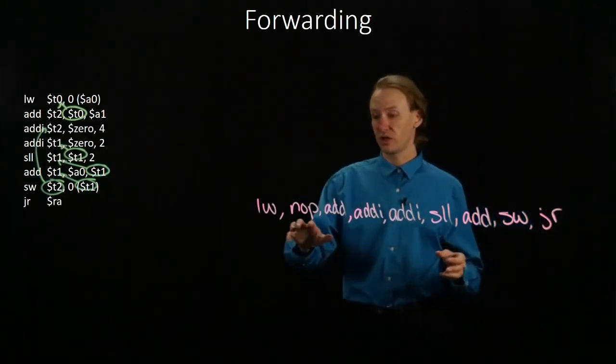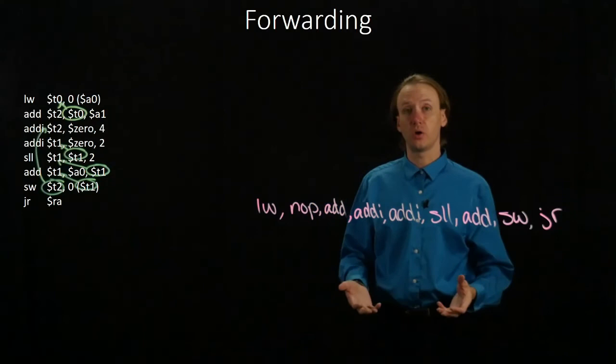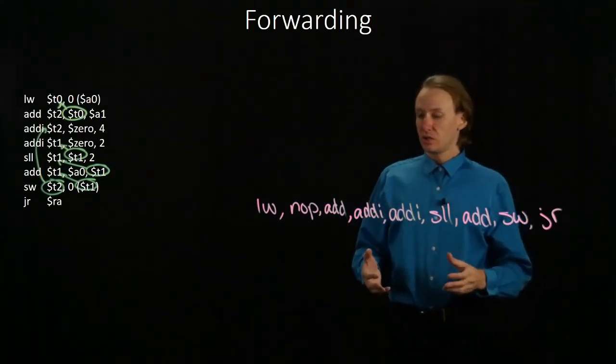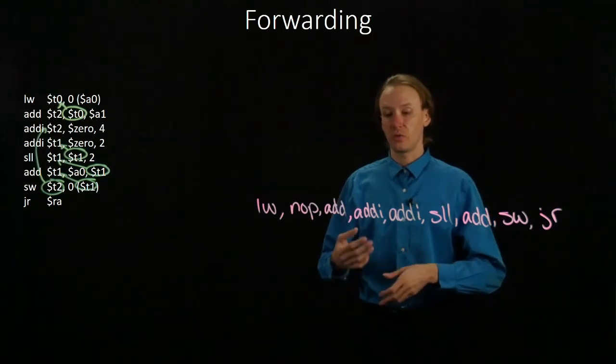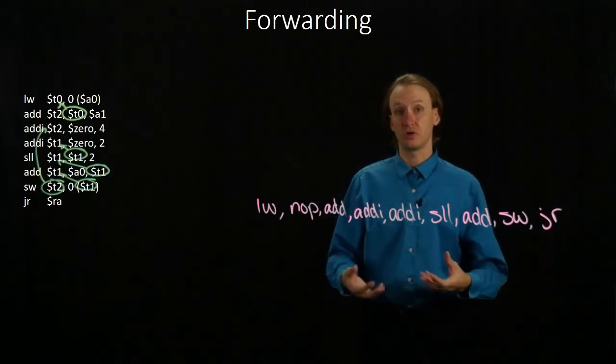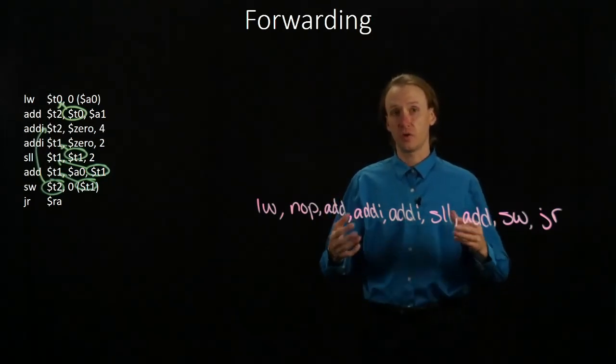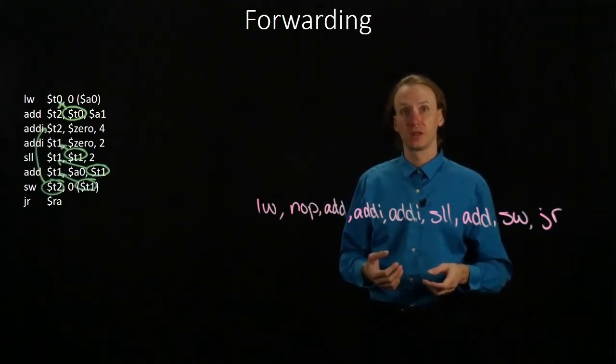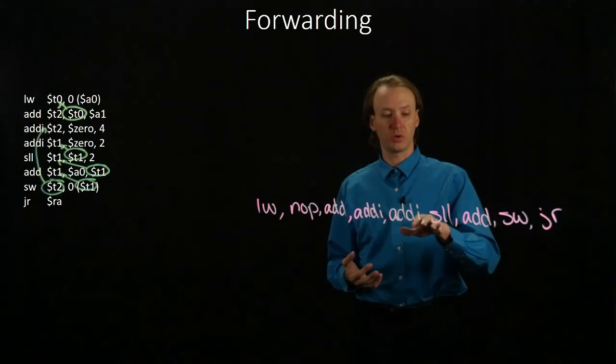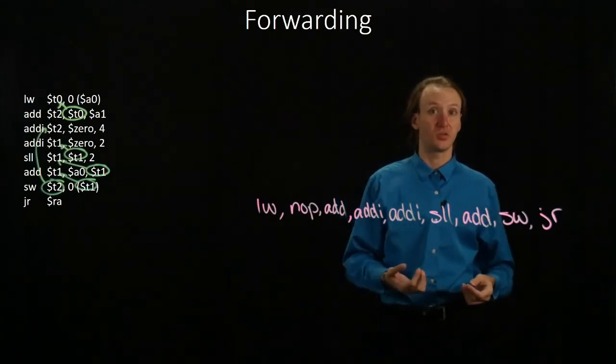So in this case, I've reduced my delays to just one. I only have one no-op now, so this code is going to run a whole lot faster, because it's not sitting around waiting for instructions to complete before I can run new ones. I can just forward data from one instruction to the next without a whole lot of waiting. So forwarding works out really well when you have lots of ALU instructions to run.